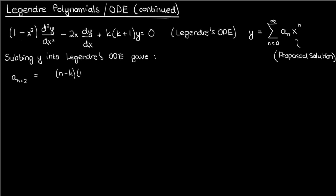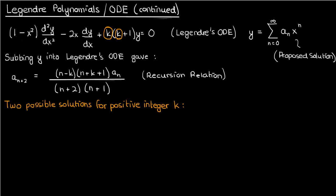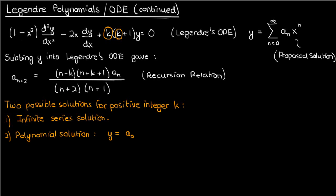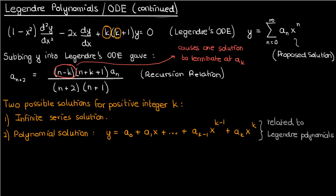The recursion relation is: a_{n+2} equals a_n times n minus k times n plus k plus 1, all divided by n plus 2 times n plus 1. For k a positive integer, there were two possible solutions: an infinite series solution, and a polynomial solution of degree k related to Legendre polynomials. The series terminates because the n minus k term in the numerator causes a_{k+2} and everything after it to become zero, so the series only goes up to a_k.